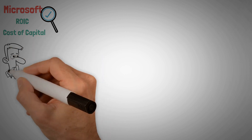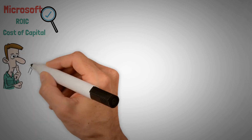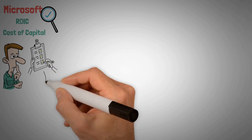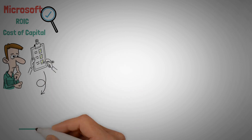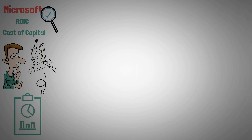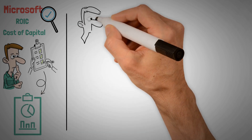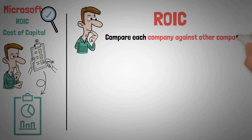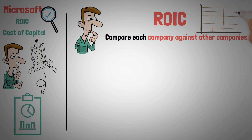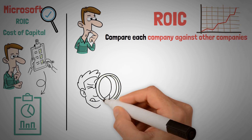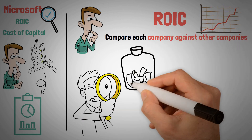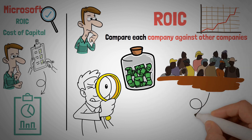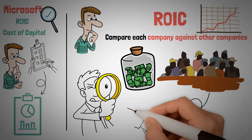One of the flaws of ROIC is it only looks at 12 months, which is far too short a time to evaluate a company. Small sample sizes can skew results. The other way to use ROIC is as a comparison tool — comparing companies directly against each other or looking at industry benchmarks. Using ROIC to find companies that build value for the shareholder offers another tool to identify shareholder-friendly companies.